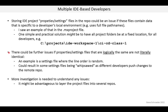There could be further issues if properties and settings files that are logically the same are not literally identical. For example, a settings file where the line order is not fixed — it's somewhat random. So two developers have identical settings, but their settings file is not literally identical. This could result in settings files being constantly changed as different developers push to the remote repo, causing spurious changes in the Git history. More investigation is needed to understand these issues — a little Googling will likely uncover answers, since lots of people must have run across this.